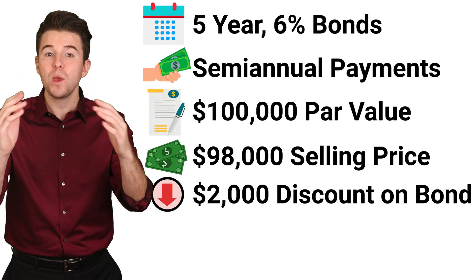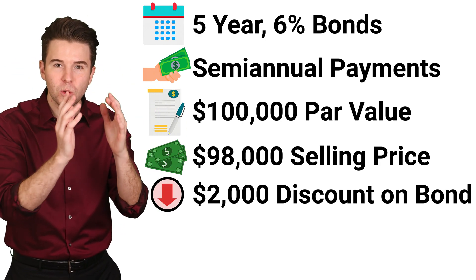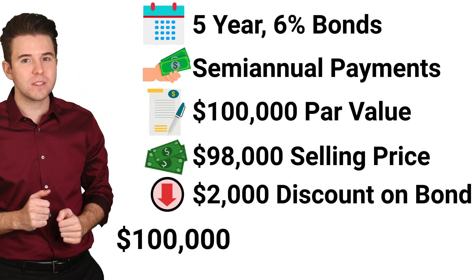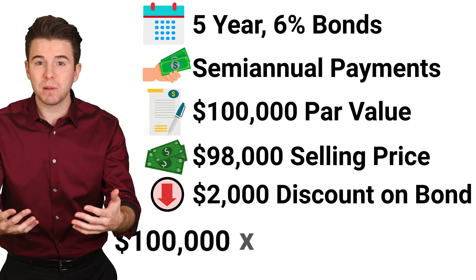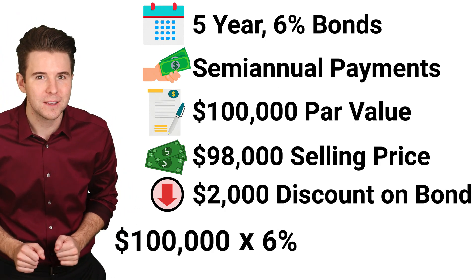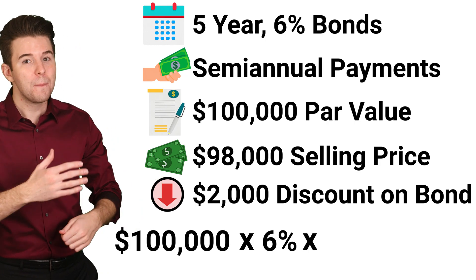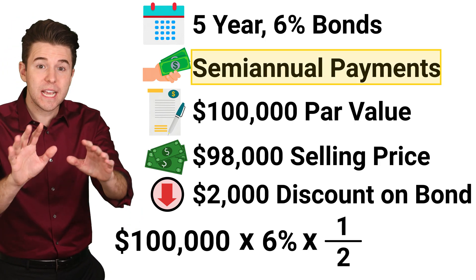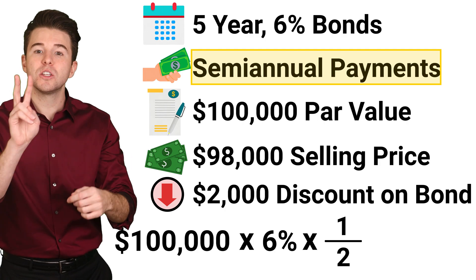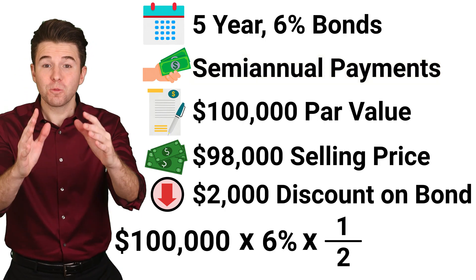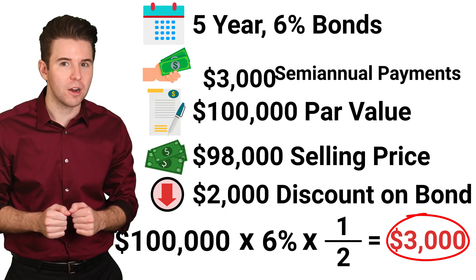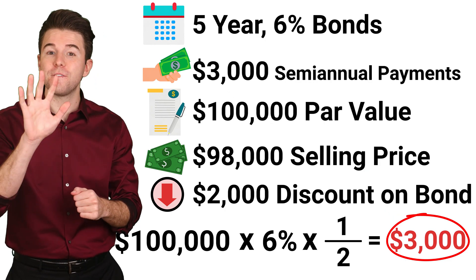Next, we want to compute the semi-annual interest payments. We take the $100,000 par value, multiply it by the 6% annual contract rate, and multiply that by 1 over 2, because these are semi-annual payments, meaning twice per year. This results in $3,000 interest payments twice per year for the next 5 years.